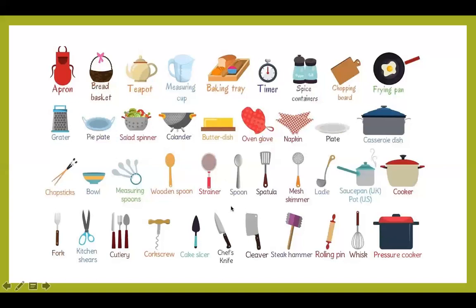Spoon. Spatula. Mesh skimmer. Ladle. Pot. Cooker. Fork. Kitchen shears. Cutlery — los cubiertos, que incluyen a fork, a spoon, and knife. Corkscrew. Cake slicer. Chef's knife. Cleaver. Steak hammer — para aplanar la carne. Rolling pin. Whisk. Pressure cooker.